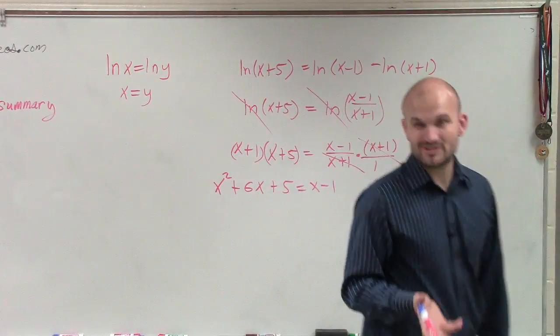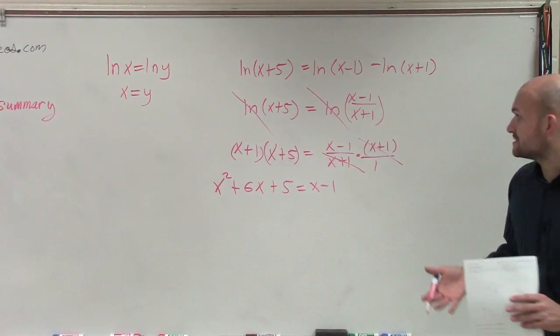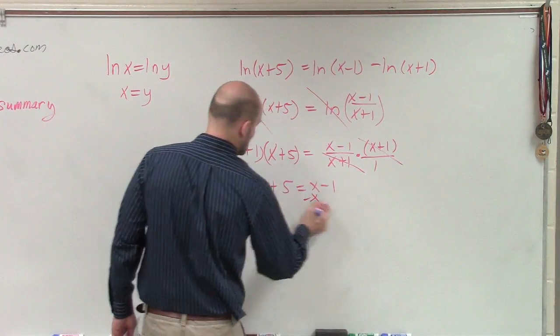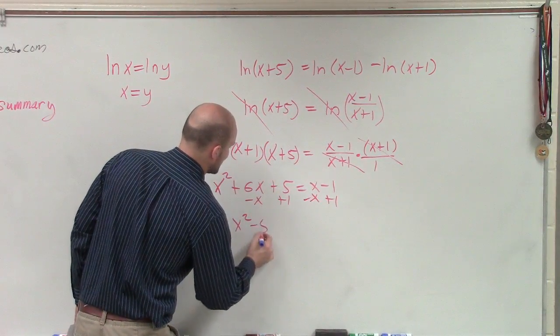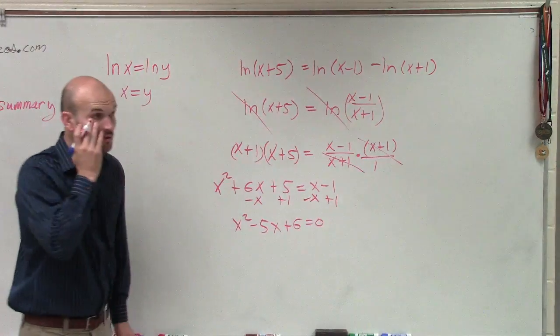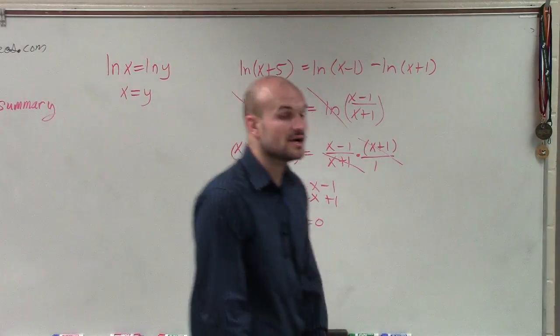But now we know that we have a quadratic. So to solve a quadratic like this, we need to make sure that we set it equal to 0. So I have to subtract the x, add 1. So I have x squared plus 5x plus 6 equals 0.